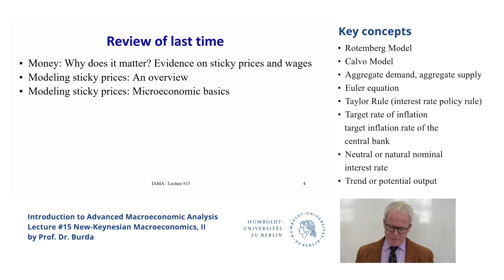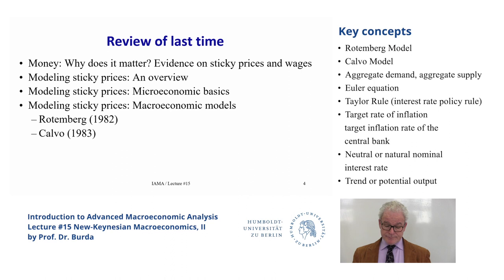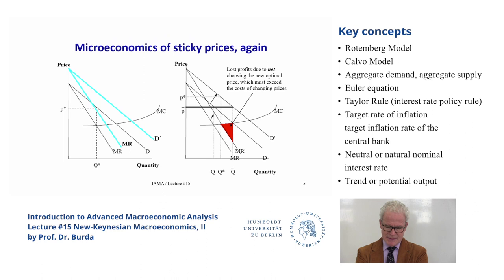I tried to explain why prices could be sticky. One story is the adjustment costs involved with moving a price very fast — firms, enterprises, and workers setting wages are averse to rapid changes. Another story is it may simply not be possible for them to change. So we have two models: Rotemberg and Calvo. Calvo is the leading model and I'll spend more time on it today.